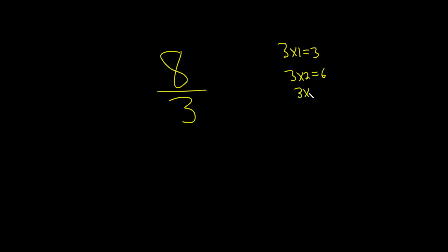But if you do 3 times 3, you get 9, so it doesn't go in 3 times, that's too big. So 3 goes into 8 two times, because 3 times 2 is 6. So 2, that's the whole number part of our mixed number.